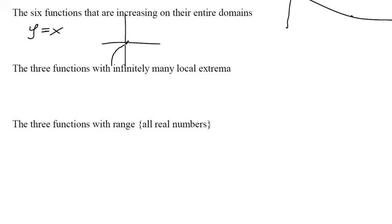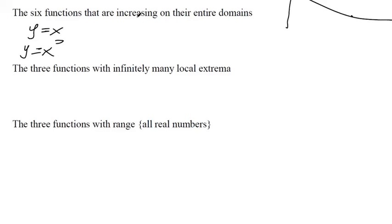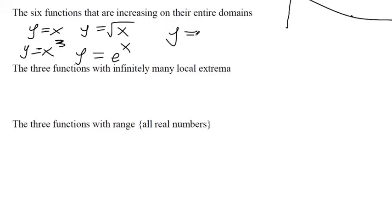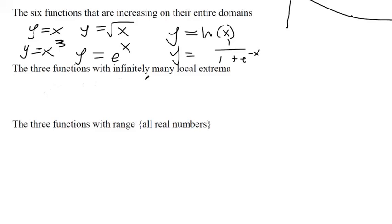Y equals x cubed is always increasing — pick any two points and the slope between them is always positive. Y equals square root of x is also always increasing. The exponential function y equals e to the x is constantly going up. The natural log y equals ln(x) is always increasing. And the logistic growth function y equals one over one plus e to the negative x also always has positive slope. That gives us six functions increasing on their entire domain.